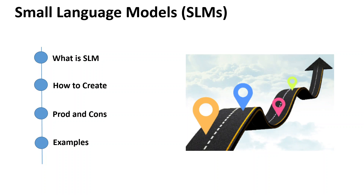Then we have BERT Mini, Small, Medium, and Tiny, primarily from Google, available in scaled-down versions — for example, BERT Mini is just 4.4 million parameters, whereas Medium is a 41 million parameter model. We also have GPT-Neo and GPT-J, which are primarily scaled-down iterations of OpenAI's GPT models.